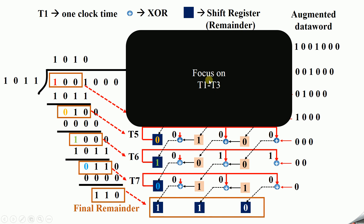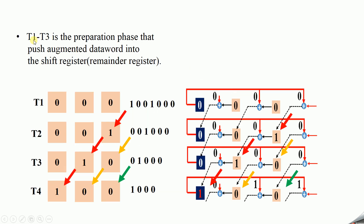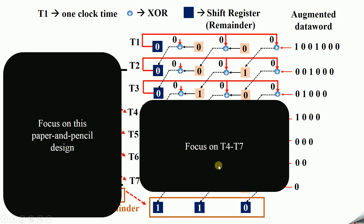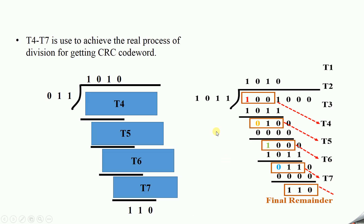First step: focus on T1 to T3. The T1 to T3 is the preparation phase — push the augmented data word into the shift register. T4 to T7 is used to achieve the real process of division for getting the CRC code word.